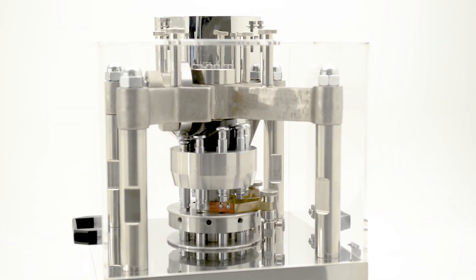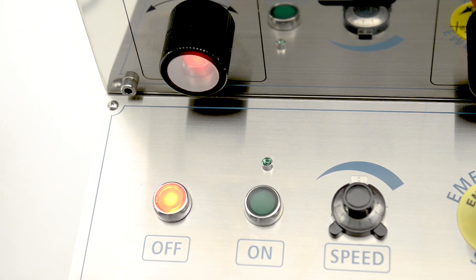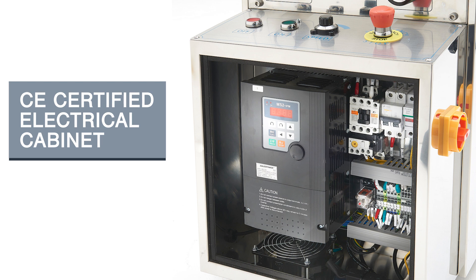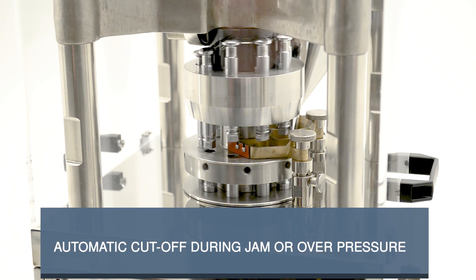A Perspex shield with safety switches, as well as safety switches on all doors to ensure it won't run whilst they're open. A CE-certified dust-free electrical cabinet and emergency stop button to keep your operator safe at all times, as well as an automatic cutoff protection during a jam or overpressure.